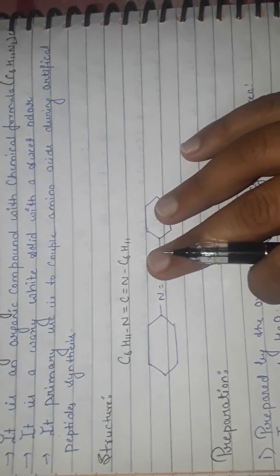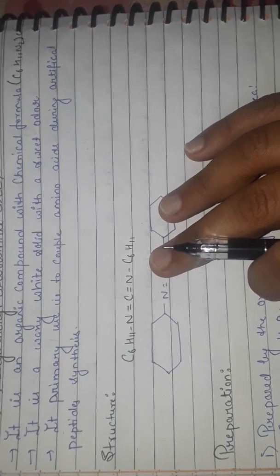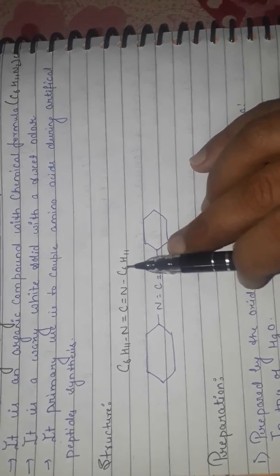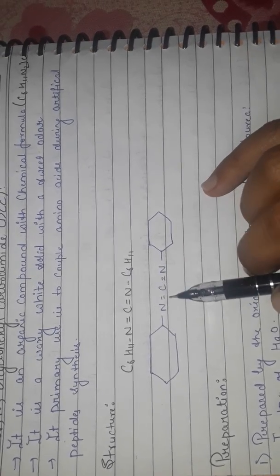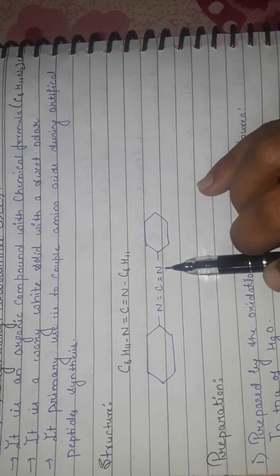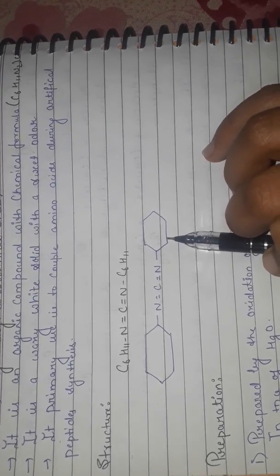The structure is C6H11-N=C=N-C6H11, with benzene linkages. This is the structure of DCC. For the first preparation, it can be prepared by the oxidation of N,N'-dicyclohexyl thiourea.